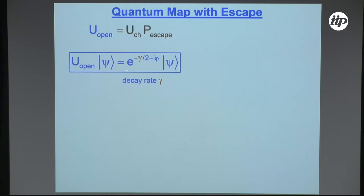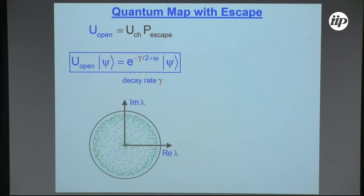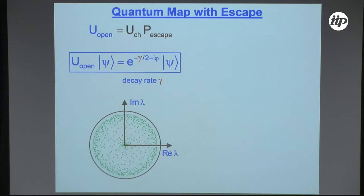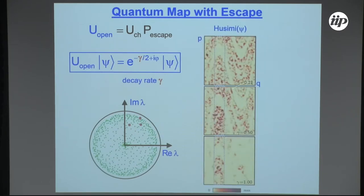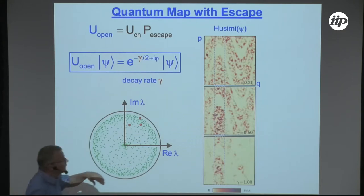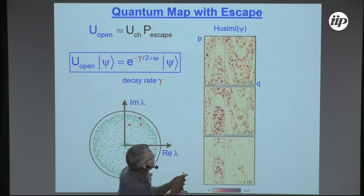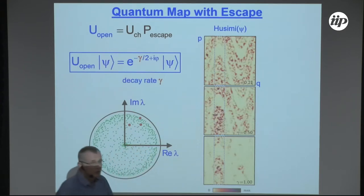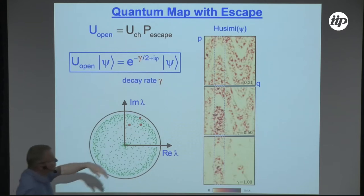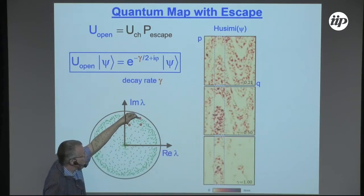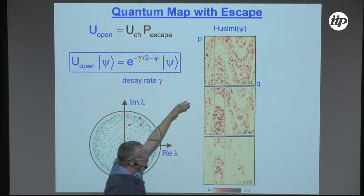Quite importantly, these are decaying states — I have a decay rate gamma — which I can see when I plot these eigenvalues; they are inside the unit circle with a spectral gap here. Now let's look at three of these eigenvectors in the Husimi representation in phase space. Three observations: first, you see the eigenvectors are not uniformly distributed like in a closed system — you clearly see this low density, which is the iterated opening. There is a fractal structure in these eigenfunctions. Secondly, as a function of gamma, when you go from long-lived to shorter-lived states, these states change a lot.